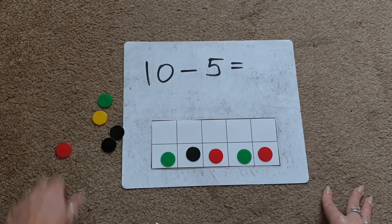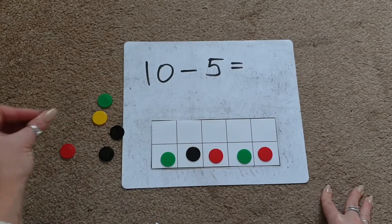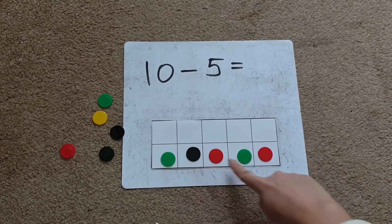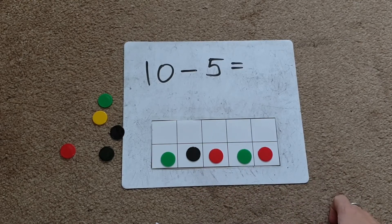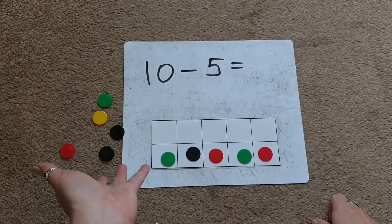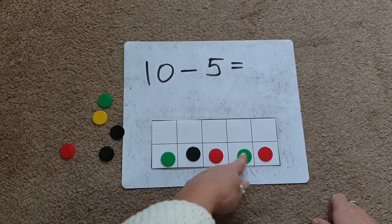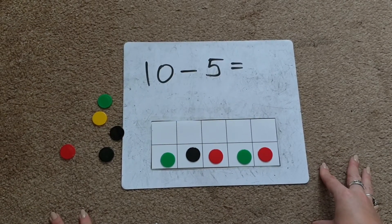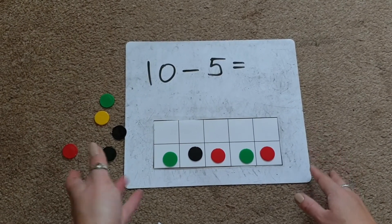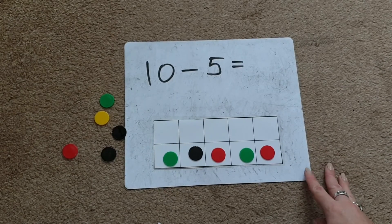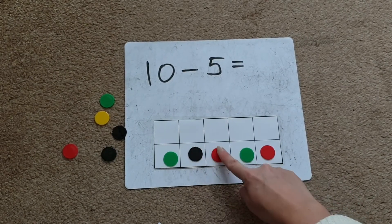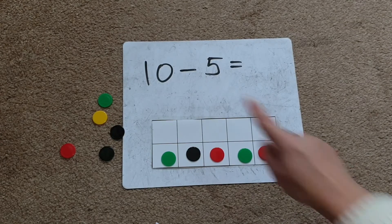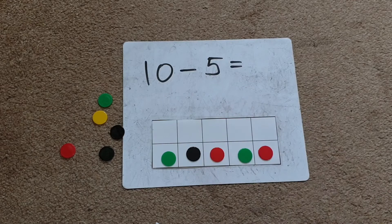The children are experiencing physically taking the objects away. Then I would ask them to count how many counters are left. If children have worked with 10 frames before, they might know that if the whole bottom line is filled, that's 5. They might not need to count to check, but if they're new to 10 frames, they might verify: 1, 2, 3, 4, 5. So 10 take away 5 equals 5.